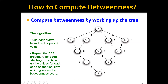Note that this is only for all the shortest paths starting from node A. Therefore we need to repeat this entire BFS process for each starting node U, and then we will add up the values for each edge as the final flow. This will give us the final betweenness score for the graph.